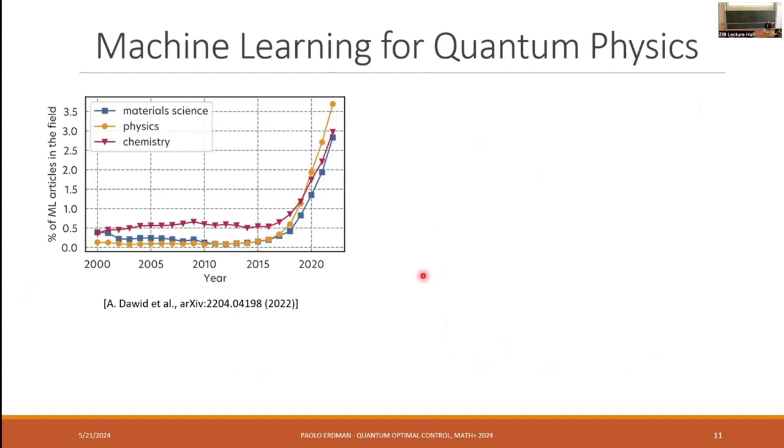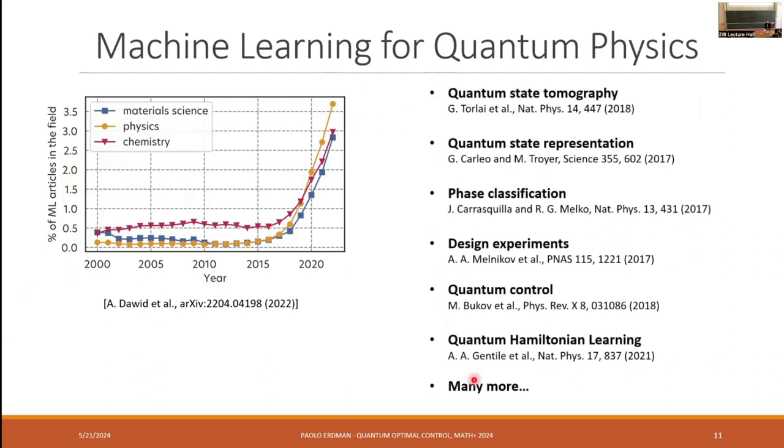And it's been also recently proposed to reduce the entropy production in closed quantum systems. And as another motivation, these are, for example, the percentage of papers that use machine learning in chemistry, physics, and material science. And in the last few years, it's been increasing quite rapidly. And these are different applications of machine learning just in quantum physics. So what we wanted to do is to try to apply some methods when it makes sense of machine learning also to problems in quantum thermodynamics.